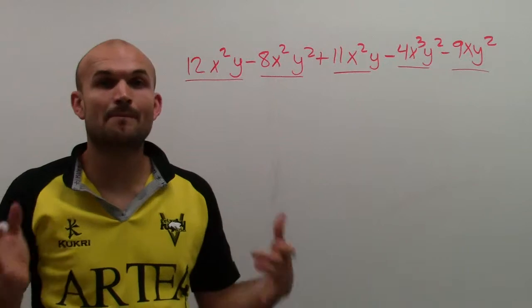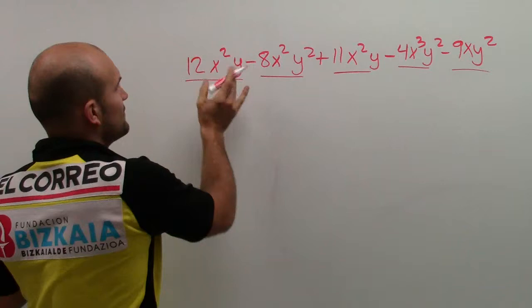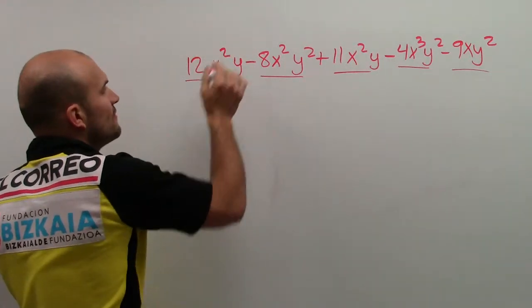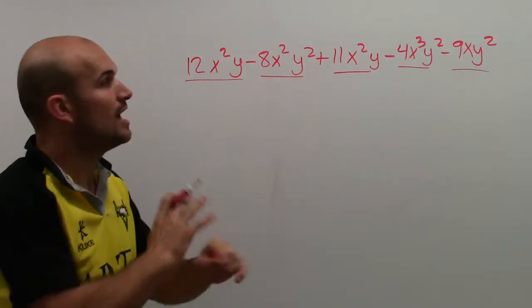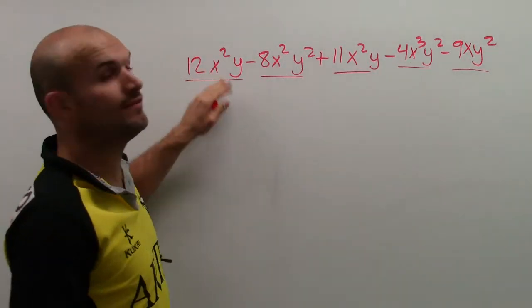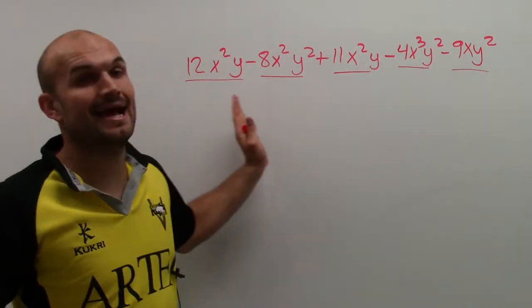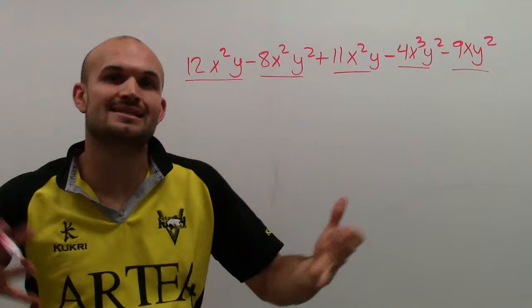And for us to combine them, that means I have to have the exact same variable factors. So for this first term, let's look at this. What are the variable factors? I have an x squared and a y. I can only add 12x squared y to any other number that has an x squared y. It has to have the exact same variable factors.